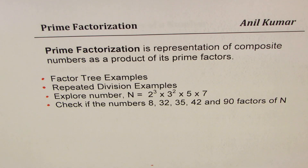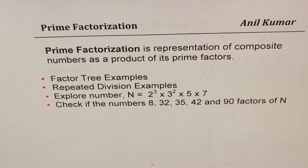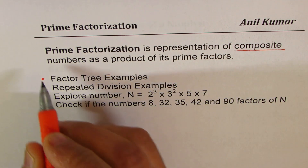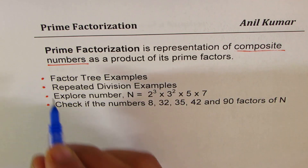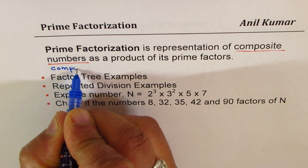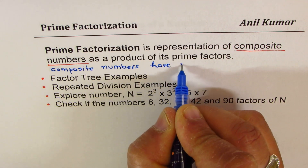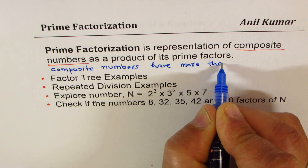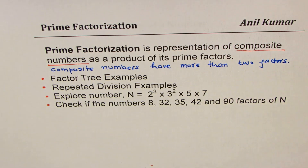I'm Anil Kumar. We'll discuss prime factorization in detail with the help of examples. Prime factorization is a representation of composite numbers as a product of its prime factors. First, we need to understand what composite numbers are. Composite numbers are numbers which have more than two factors. We'll see how to write them as a product of prime factors.